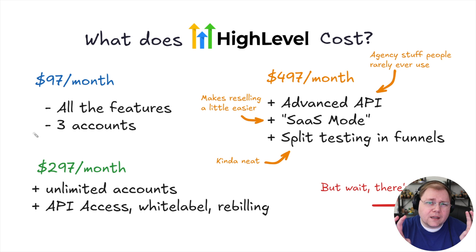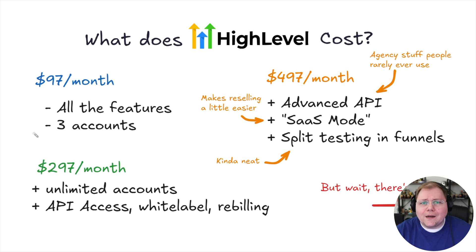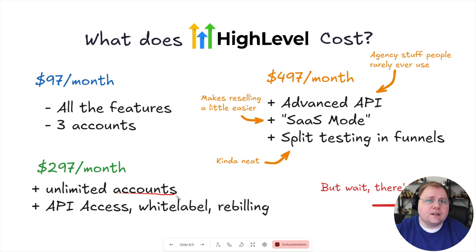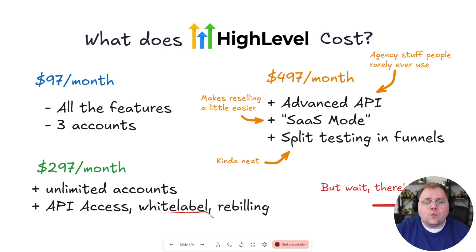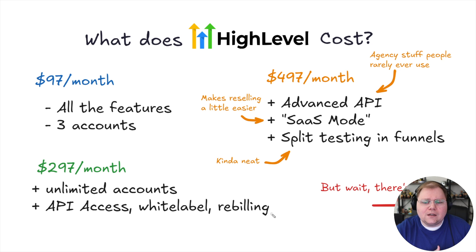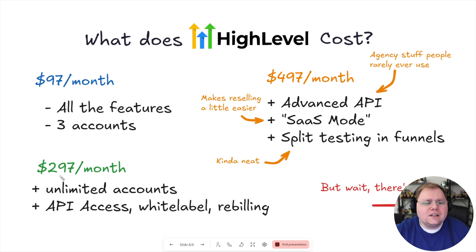With the $97 plan you get three sub-accounts — Convology would be one, and I'd have two sitting spare for a family member or friend's business. The $297 per month plan is where things get interesting: you get unlimited accounts — I could have a million customers. You also get API access, white label ability to put your own logos on there, and the ability to do some rebilling with no markup. Once you get past the $97 plan, things start to be more oriented toward agencies or resellers.